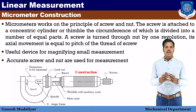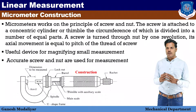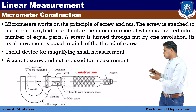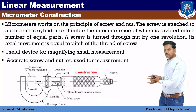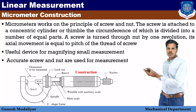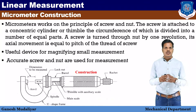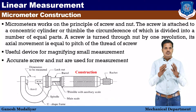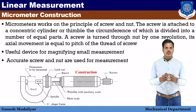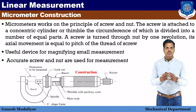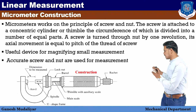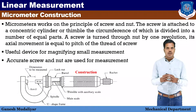Accurate screw and nuts are used for this measurement. Here you can see a concentric cylinder — that is the thimble. And there is a barrel. There are markings on both the barrel and the thimble.